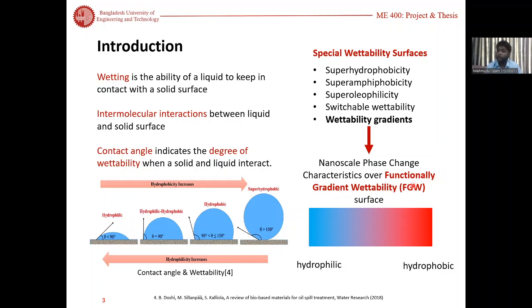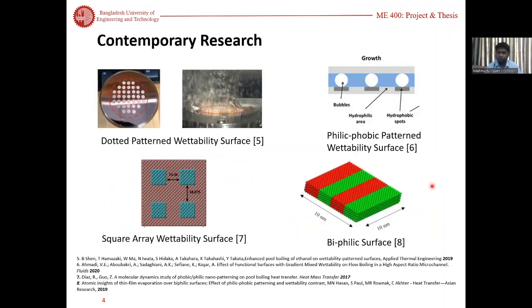There have been a number of contemporary research on different types of spatial wettability surfaces: dotted pattern surface, philic-phobic surface, square array wettability, and bi-philic wettability. But no study has been conducted on FGW surface.